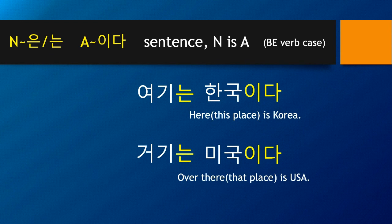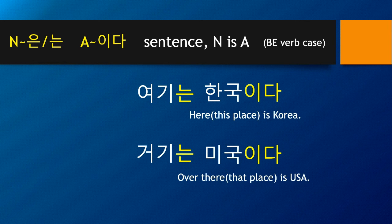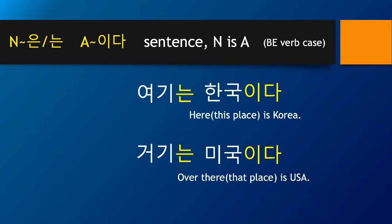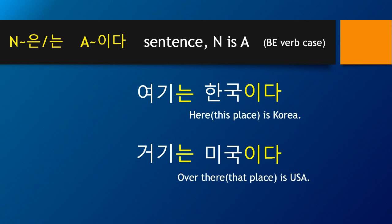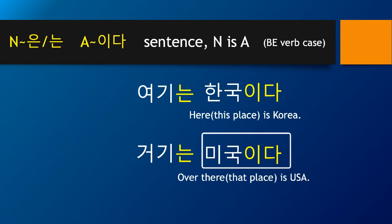The last example with 이다: 이다 is almost like 'it is.' 여기 means here, so 여기는 means 'here is.' 여기는 한국이다 means 'here is Korea.' Over there is 거기, so 거기는 is 'over there is.' 거기는 미국이다 means 'over there (or that place) is USA.'